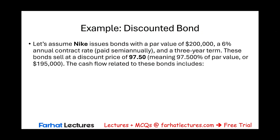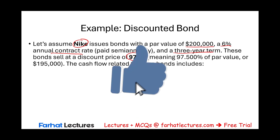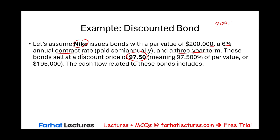Let's take a look at this example. Assume Nike issues a bond with a par value of $200,000. Similar to the prior example, Nike wants to borrow $200,000. It's a 6% annual contract rate — or coupon rate or printed rate — three-year term. These bonds sell at a discount price of 97.5, meaning 97.5% of $200,000 times 0.975. This is how much cash the company will receive, which is $195,000.